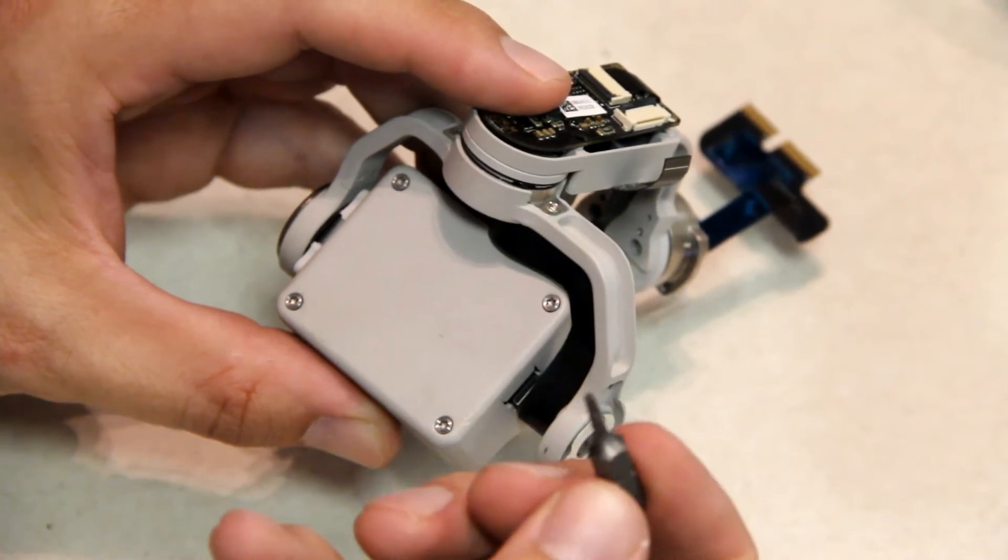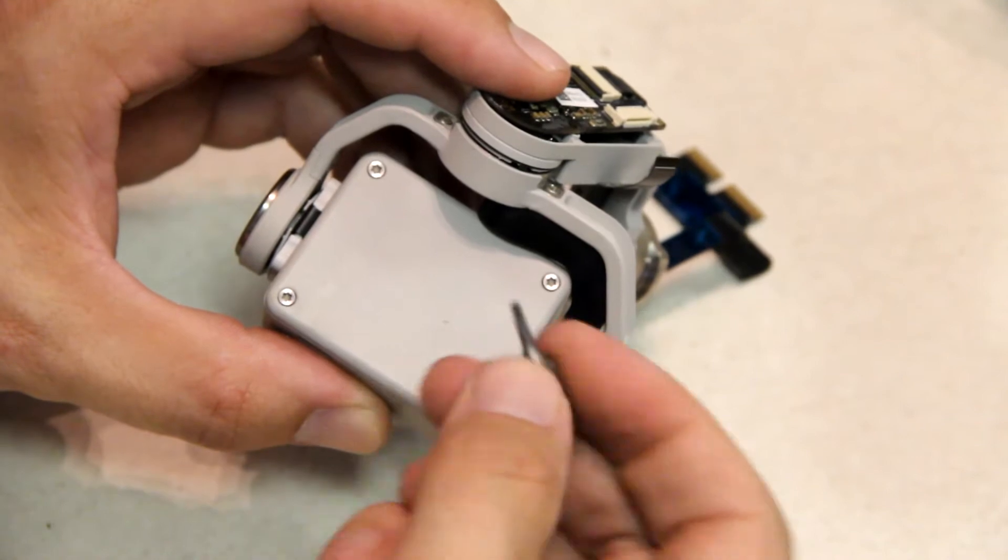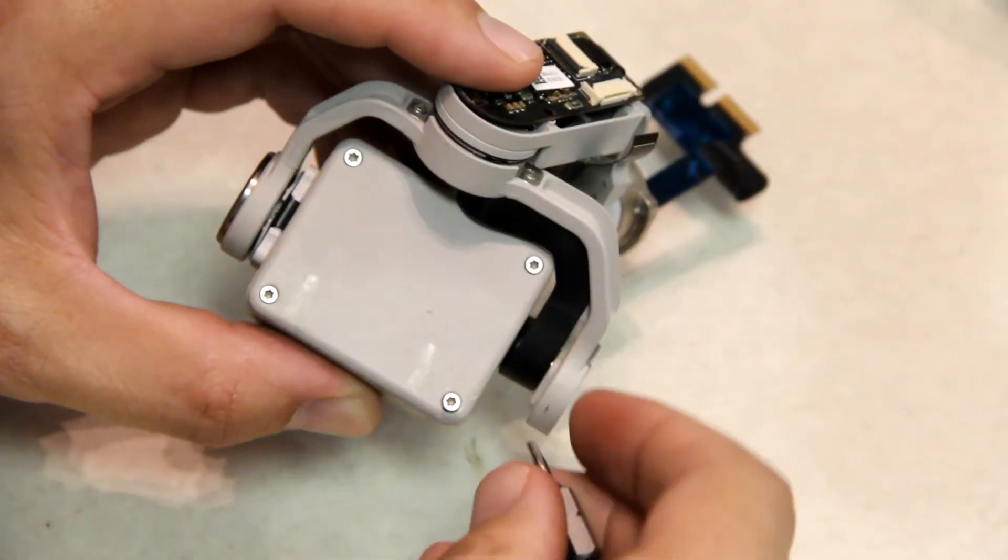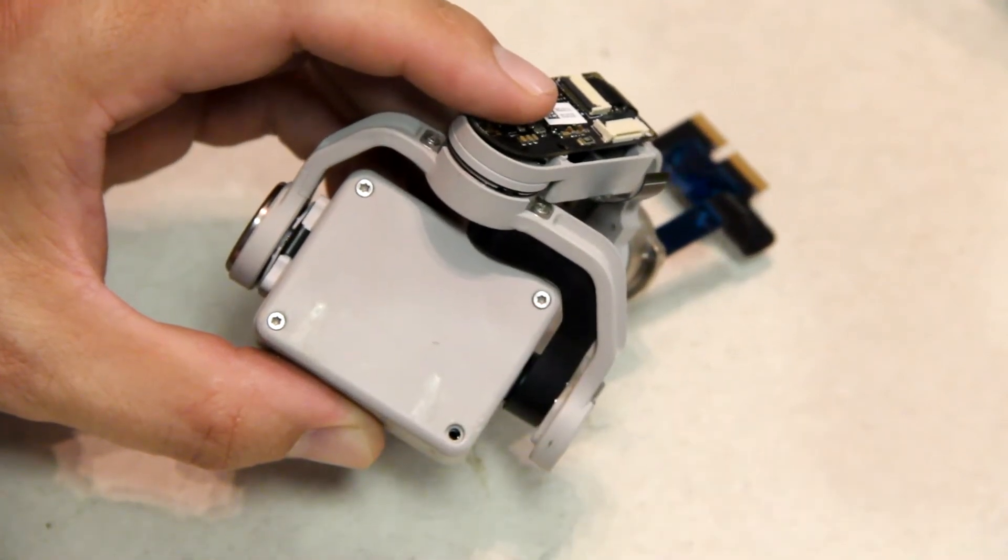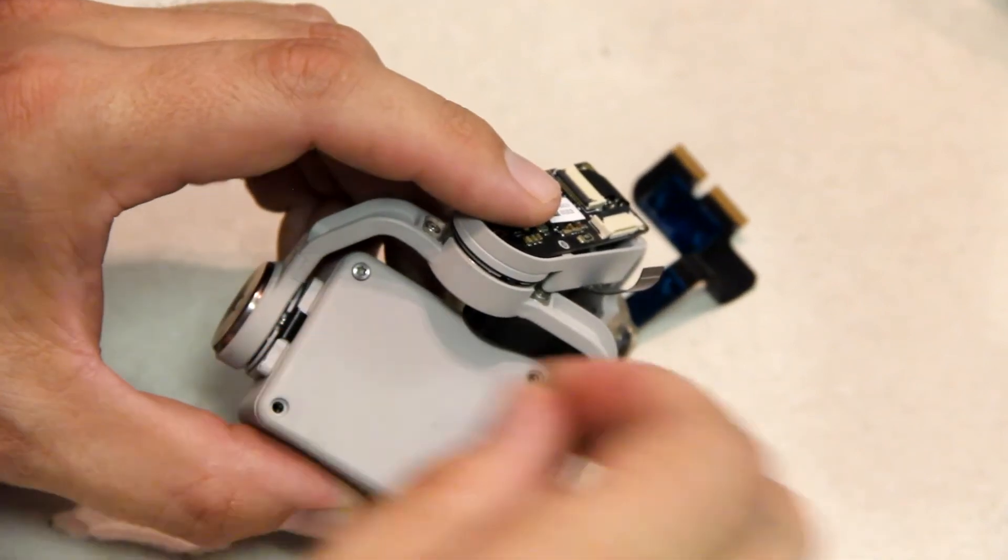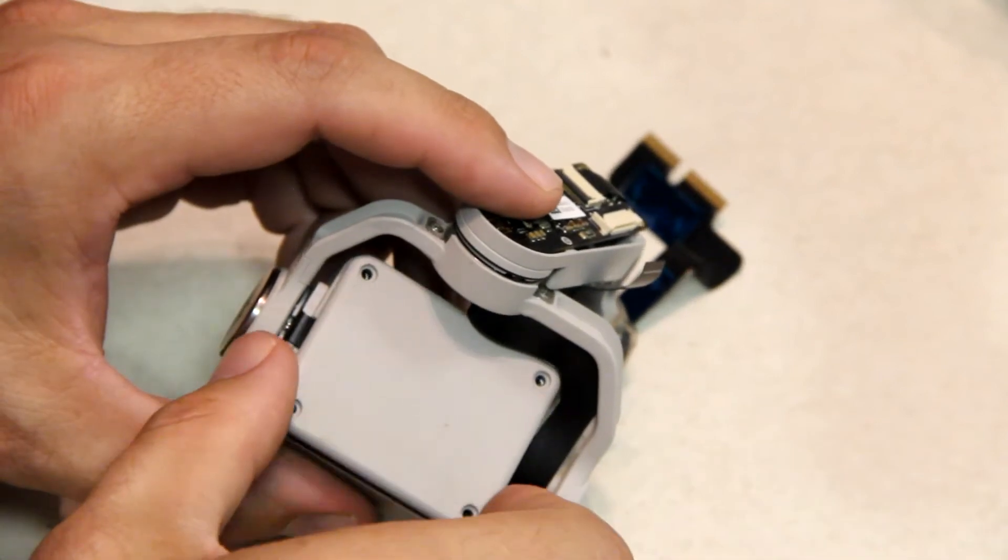For this next part you're going to need a star bit and it's a T7H. I have a screwdriver where you can slip this in and then unscrew it a little bit faster. Doing this by hand will work just fine.